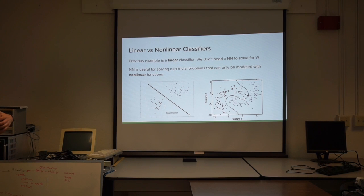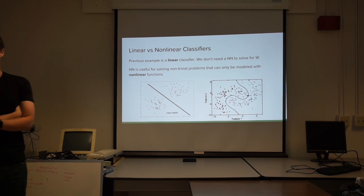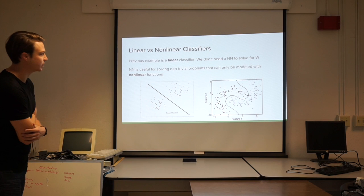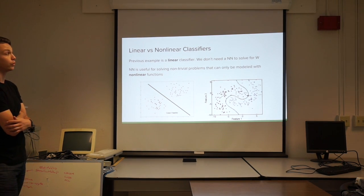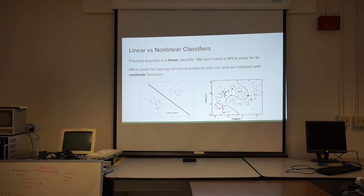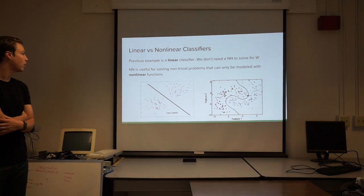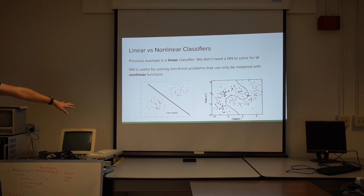So the problem with this is that it's not very useful. We don't need a neural network to solve for w. We can use algebra to do that. So the previous example was a linear classifier. Essentially, you've got just a linear combination of weights and values. So as I mentioned, it's kind of trivial and it's no need for a neural network. So we do need neural networks for non-trivial problems, that is, non-linear problems. So problems that can't be easily modeled like the one on the left here, where you can easily draw a line between two forms of data, the blue data on the right and the red data.